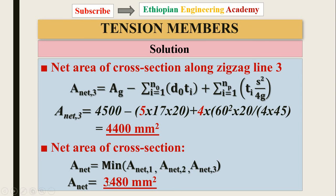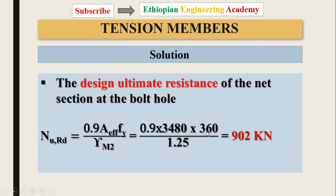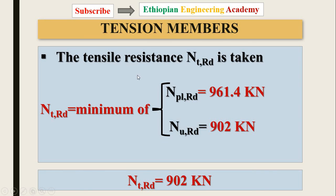For net area 3 along zigzag line 3, the formula is the same — using the number of holes and the number of zigzag lines on that path. The governing net area is the minimum of these three areas. The design plastic resistance of the gross section is calculated using yield strength and the partial safety factor, giving 906.1 kN. The design ultimate resistance of the net section is 0.9 times the minimum net area times ultimate strength divided by the partial safety factor. The tensile resistance is taken as the minimum of these two, giving the final tensile resistance capacity of the steel plate.